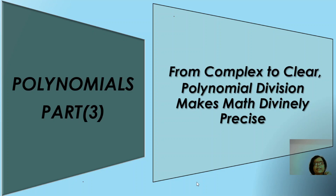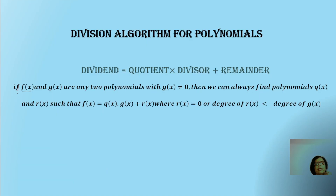Hello and welcome to Math Leap Minds once again. Today we get back to polynomials — polynomials part 3 — and here we will be discussing the division algorithm as applied to polynomials. Whether it is division algorithm applied to polynomials or to pure numbers, the algorithm is the same: dividend equals quotient times divisor plus the remainder. The only difference is that instead of pure numbers, we will be taking polynomials.